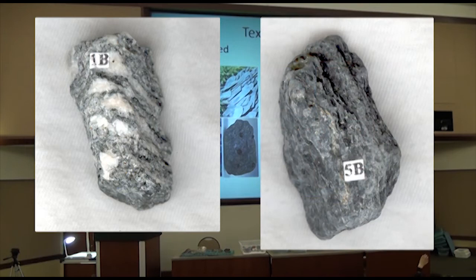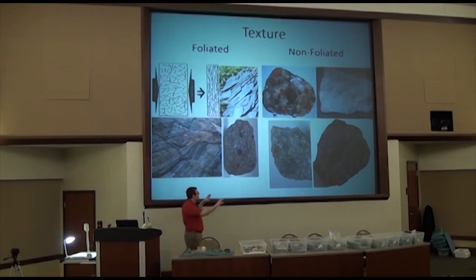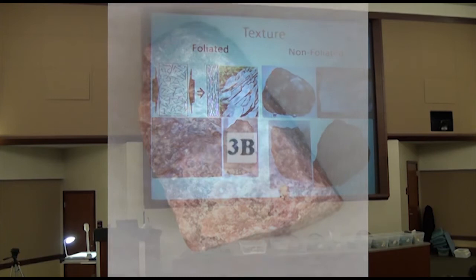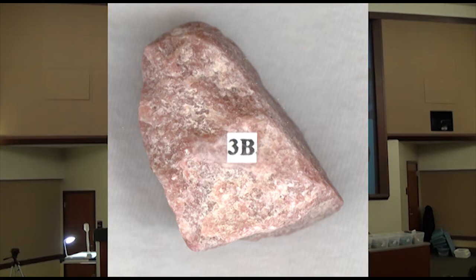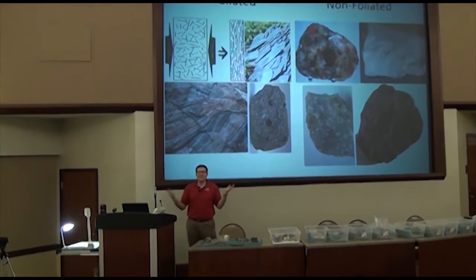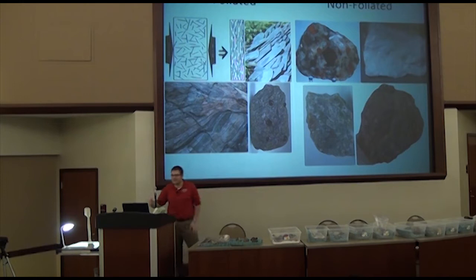Slate is another good example of a foliated rock. Non-foliated rocks have no lines or planes visible in them. Meta-quartzite is an excellent example of a non-foliated rock. You may hear me say quartzite instead of meta-quartzite sometimes — those two terms are used interchangeably. It's only been the last five or ten years that scientists have been calling it meta-quartzite.